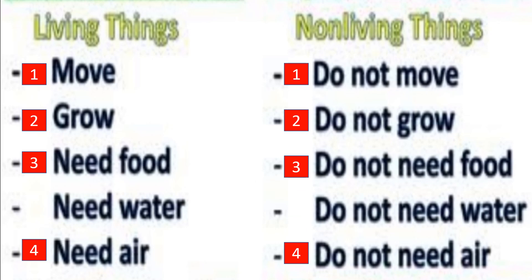So we have four points for living things and four points for non-living things. Living things: they move, they can grow, they need food and water, and they need air to breathe. Non-living things: they do not move, they do not grow and change, they do not need food and water, and they do not need air. Keep these four points in mind and note them down in your copy to practice daily.